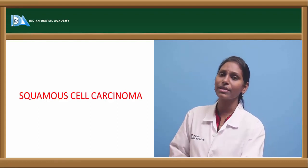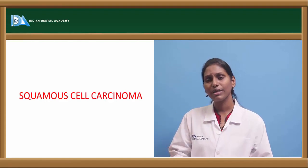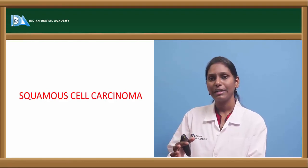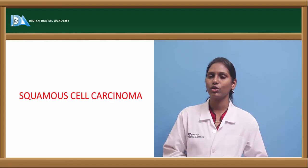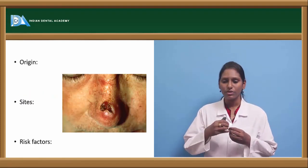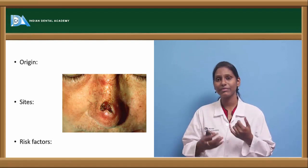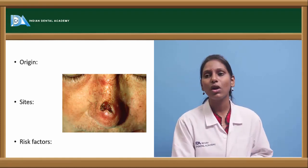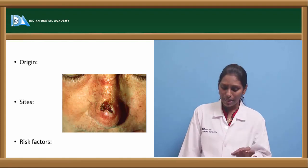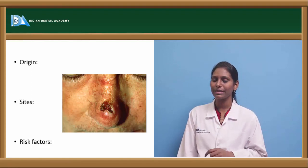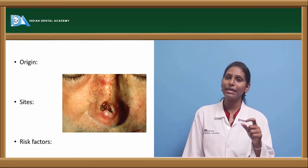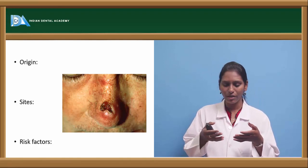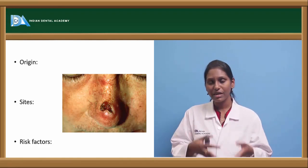The next tumor is squamous cell carcinoma, one of the most commonly encountered malignant tumors. Unlike basal cell carcinoma which is more geographically predominant, squamous cell carcinoma is usually related to lifestyle changes and habits — especially tobacco and alcohol. It is also called epidermoid carcinoma or epithelioma. It starts within the prickle cell layer of the epidermis. In invasive cases it goes deep into the underlying connective tissue.